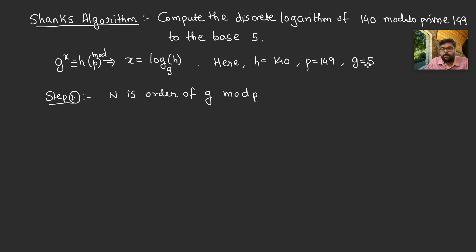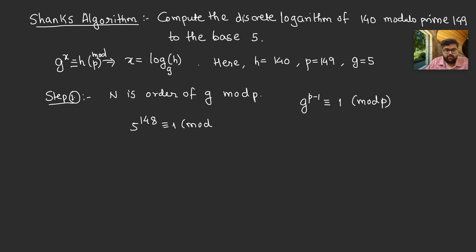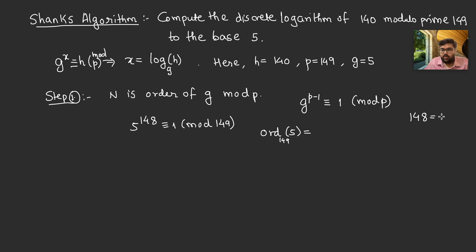We need the order of 5 modulo prime 149. By Fermat's little theorem, 5^{148} ≡ 1 (mod 149), so the order divides 148. Factoring: 148 = 2 × 2 × 37, so the possible orders are 1, 2, 4, 37, 74, or 148.